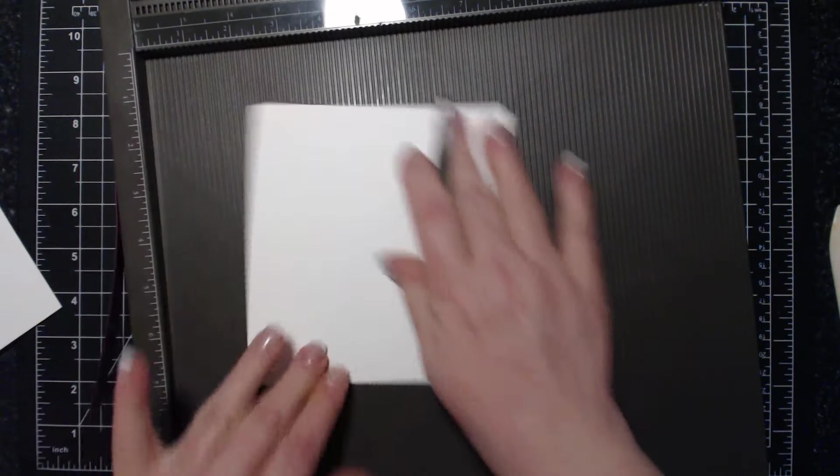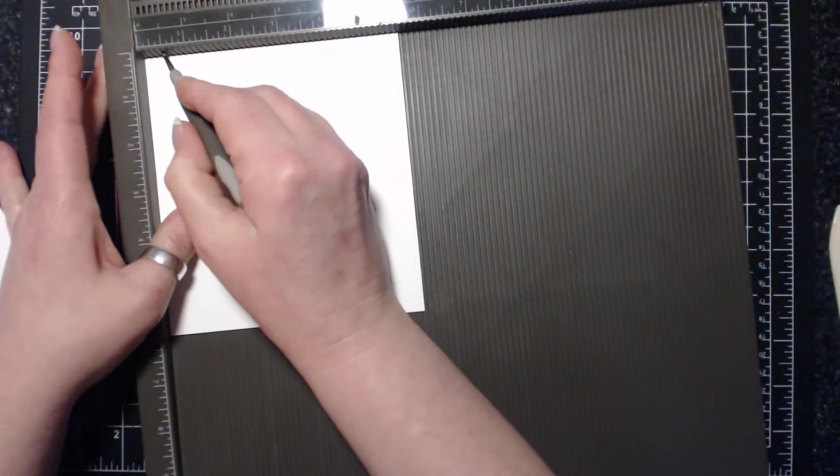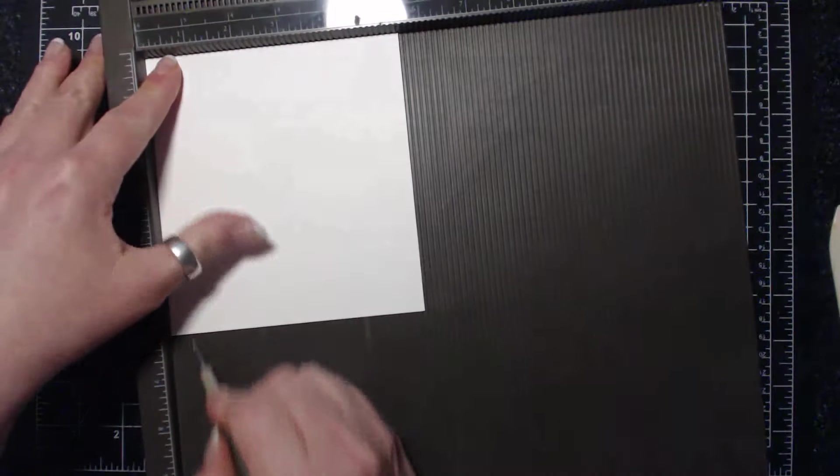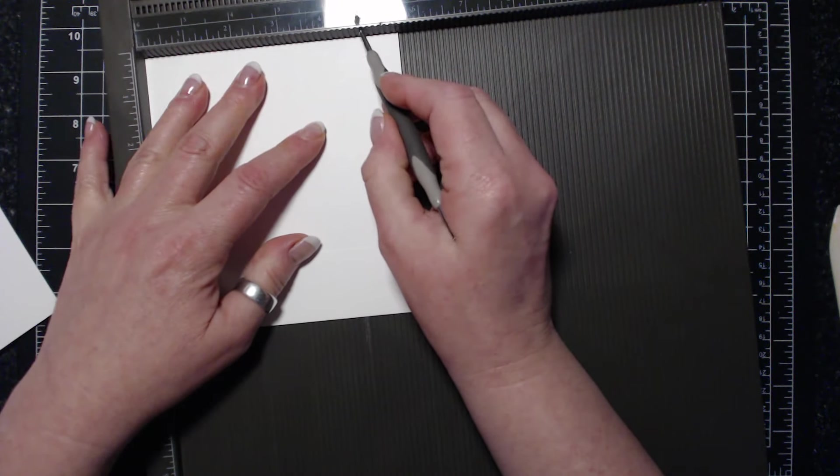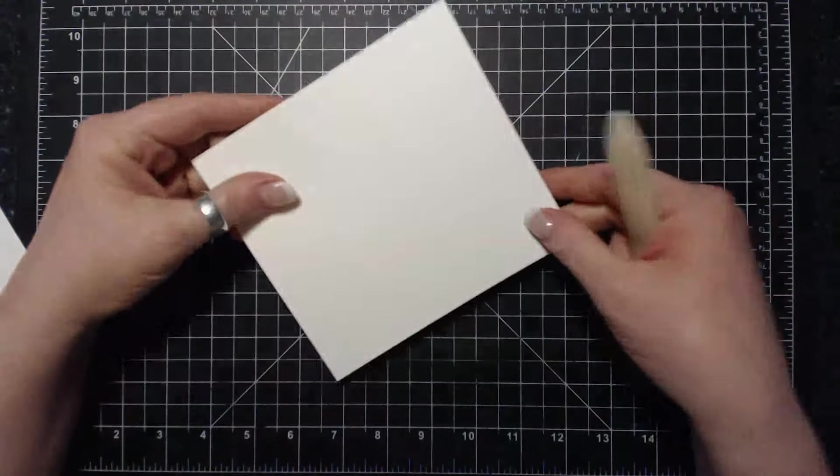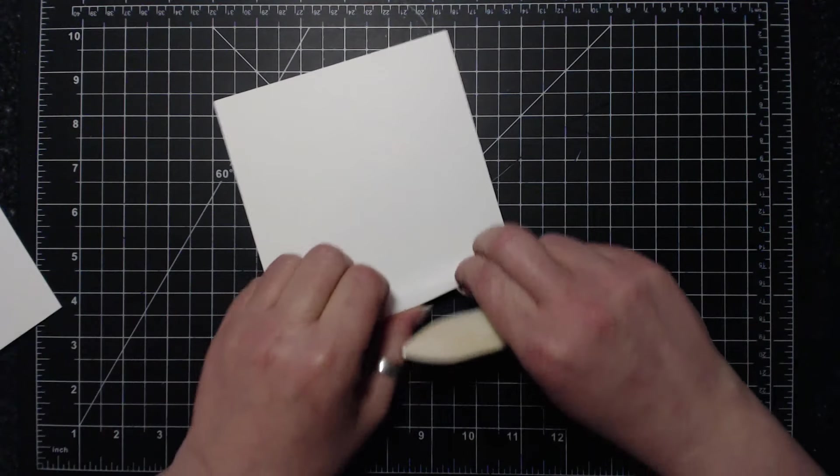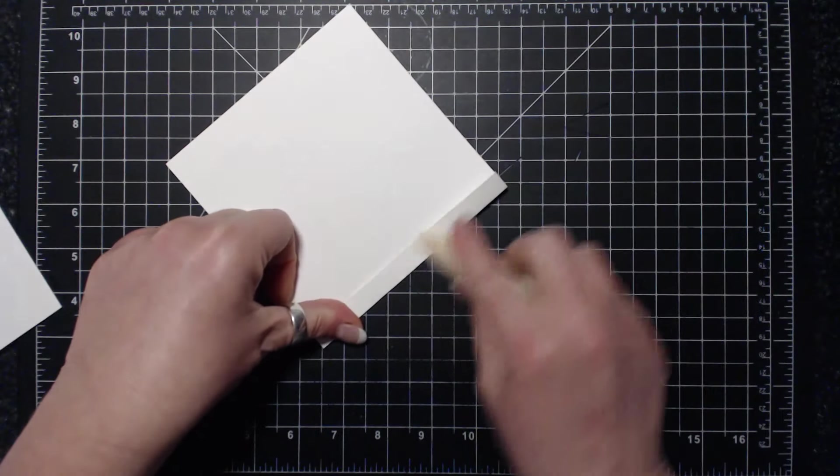Flip and we're going to score at a half, two, and four and three quarters. I'm going to fold and burnish all of my score lines.